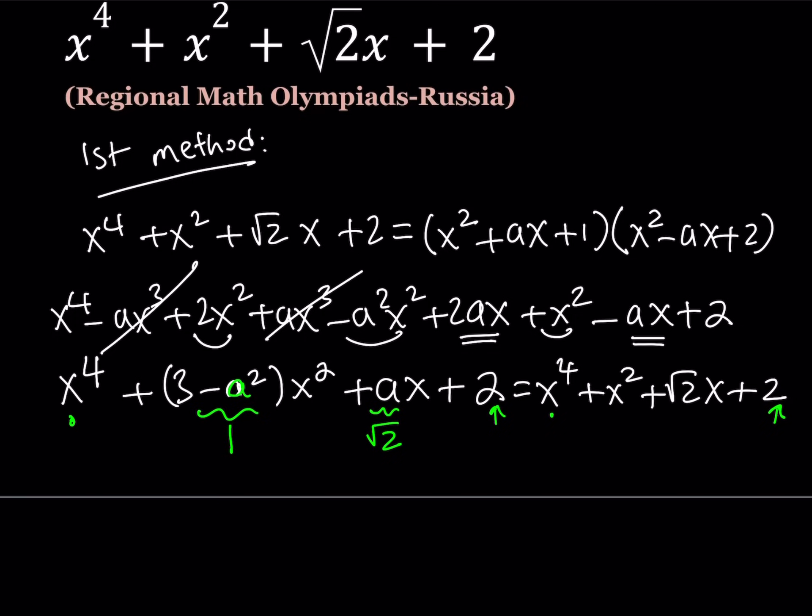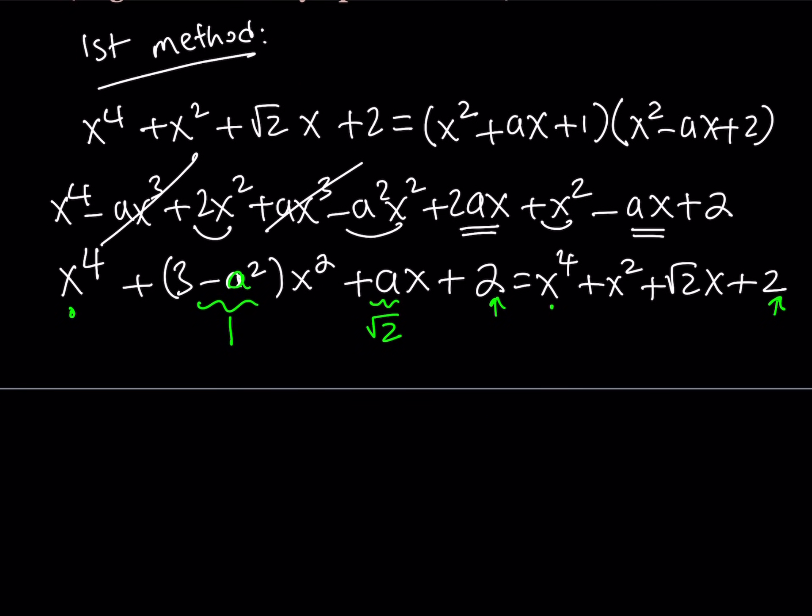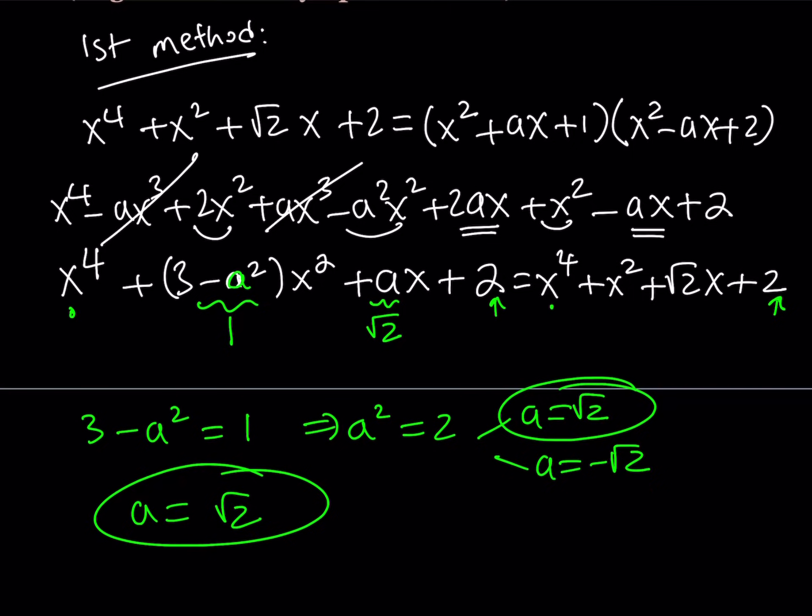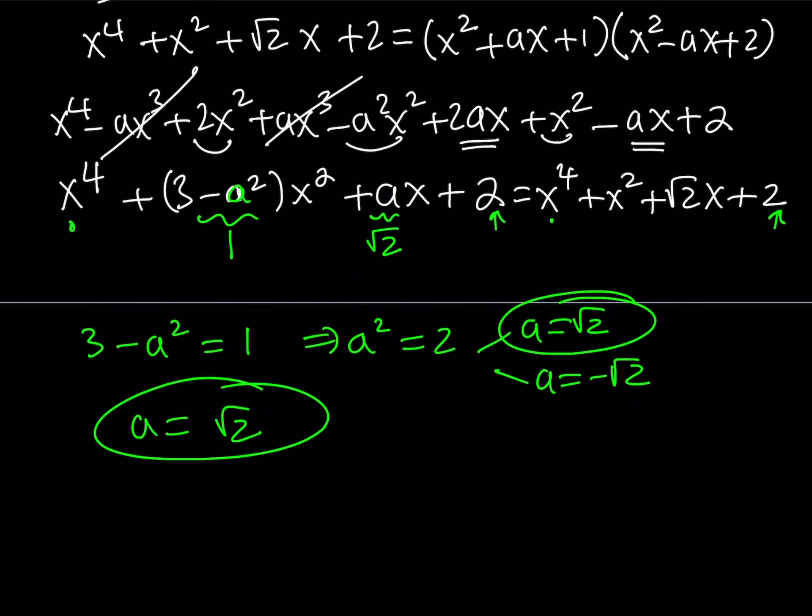Okay, great. So, now from here we get two equations, kind of like a system. 3 minus a squared needs to be 1. This means a squared equals 2. And this means a is root 2 or negative root 2. And the other equation gives us a equals root 2. So, we can just say that a needs to be root 2. So, that's the only solution we get from here. And that means that our expression can be factored.